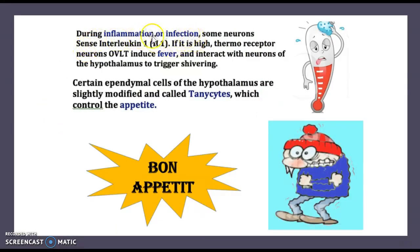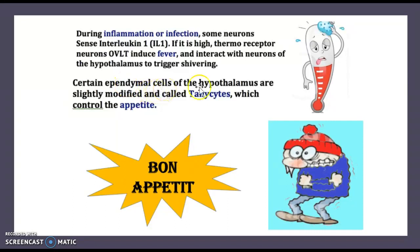When you have an inflammation or an infection anywhere in your body, some neurons will sense interleukin-1. If the levels of interleukin-1 are high, thermoreceptor neurons in the OVLT will induce a fever and interact with neurons of the hypothalamus to trigger shivering — that's the body's mechanism to raise temperature. Also, certain ependymal cells of the hypothalamus are slightly modified and called tanycytes, which control appetite.